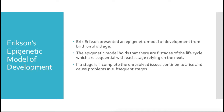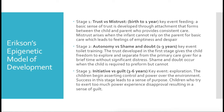The epigenetic model holds that there are eight stages of the life cycle, and each stage is essentially sequential. Each stage relies on the successful completion of the previous stage to move on to the next. If a stage is not completed or is unresolved, there will be issues that continue to arise and cause problems in subsequent stages.